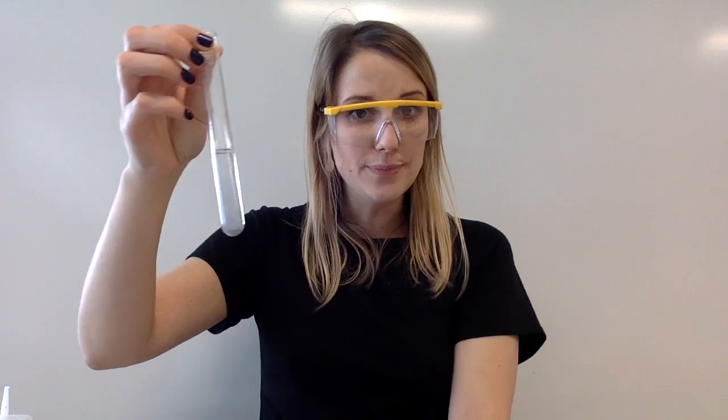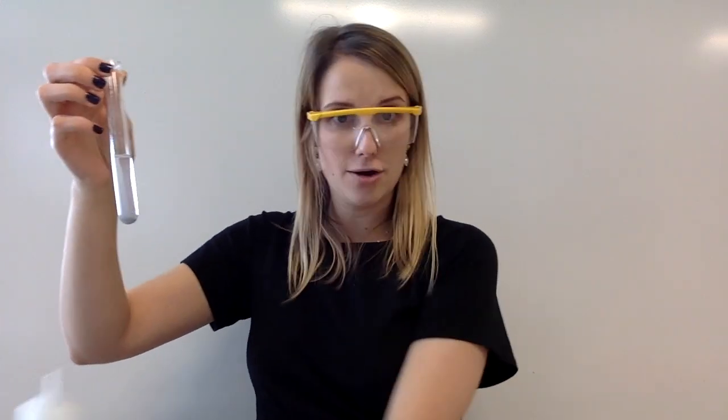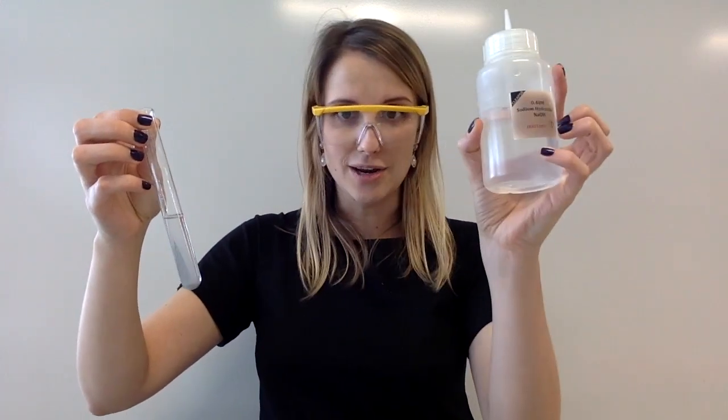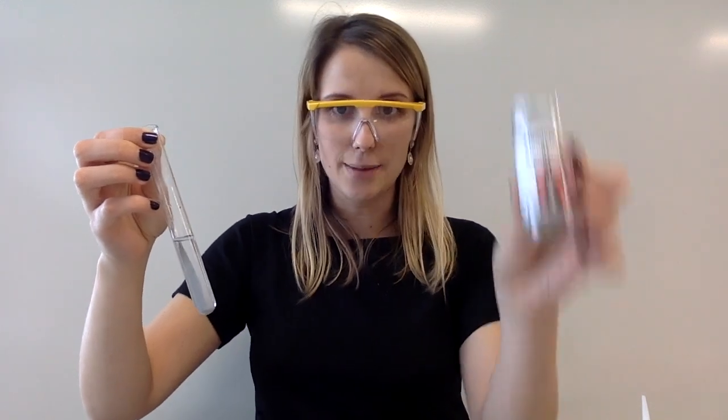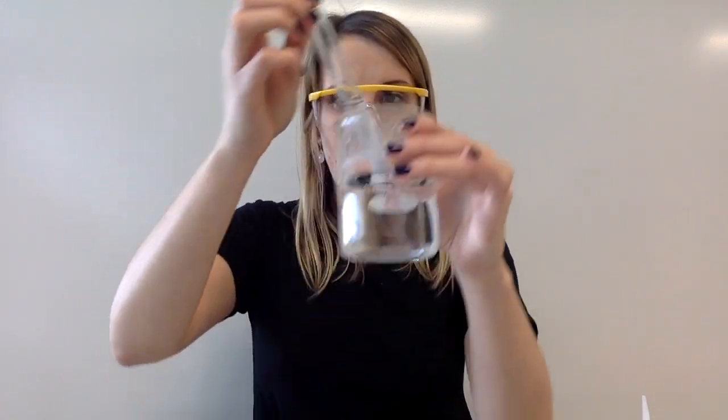Now what I'm going to do is the third step: step one, sodium hydroxide; step two, add aluminum; step three, I'm going to heat it gently in a water bath.